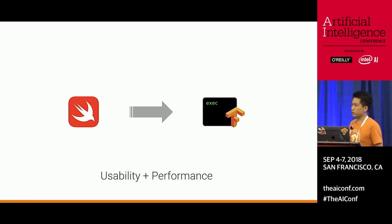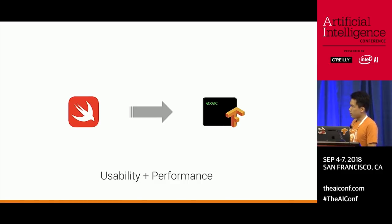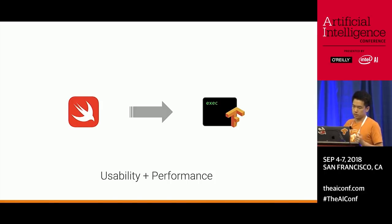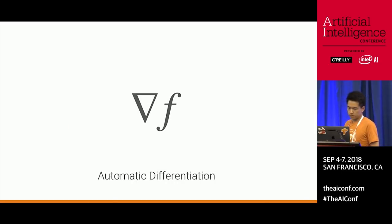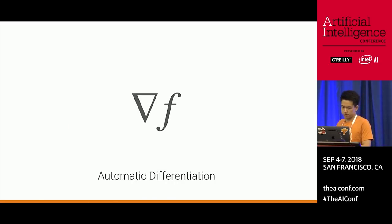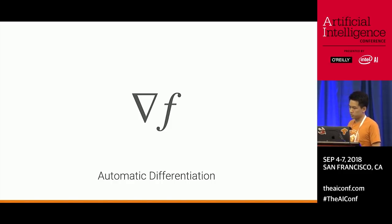With graph program extraction, we can combine performance and usability. But often in machine learning code, we also need to be able to differentiate code and train models. That's one of the key things in machine learning algorithms. A common way to do that is to take advantage of automatic differentiation.